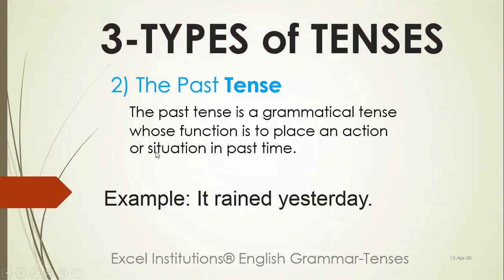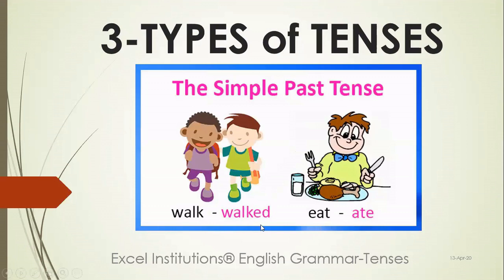What is past tense? Past tense is when an action or situation is already done — a completed action. Yesterday, before yesterday, one week ago, one month ago — it is the past. For example, 'It rained yesterday' — it happened yesterday. That is past tense.